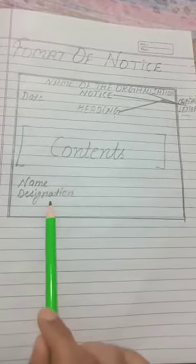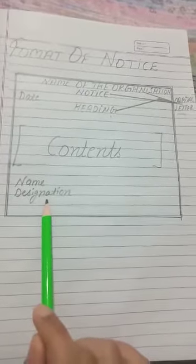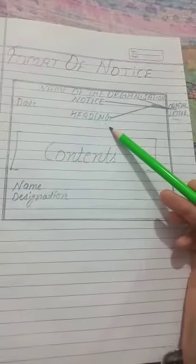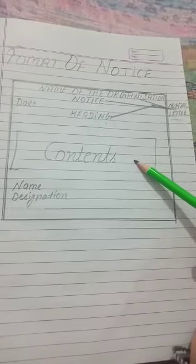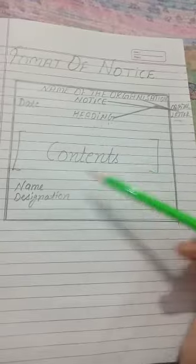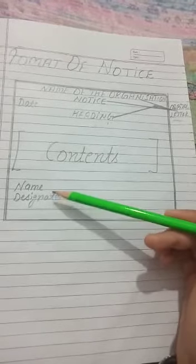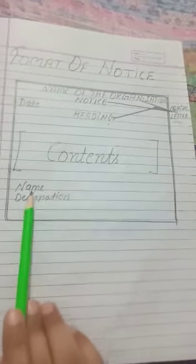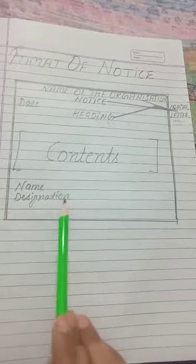I hope students, you have understood. To recap: first, we write the name of the organization or school. Then the word NOTICE. Then comes the date. Then the heading. Then the content — the main body of the notice. And finally, the name of the person who issues the notice and their designation.